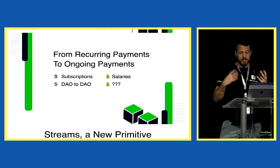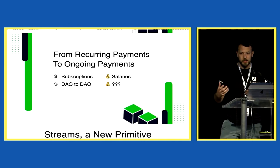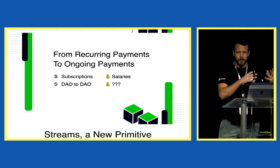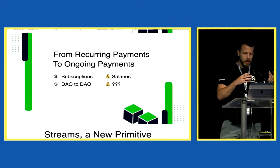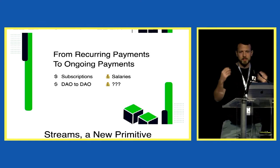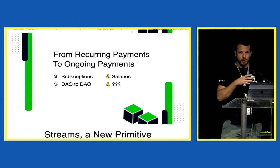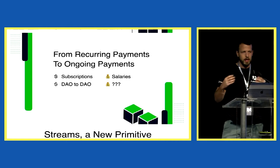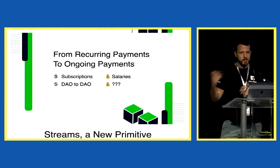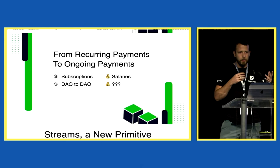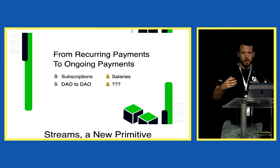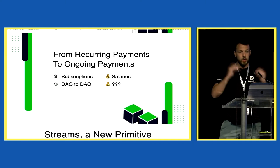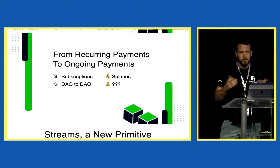The simplest things you can do with ongoing payments — which are different from the recurring payments we're used to — are subscriptions, salaries, DAO-to-DAO payments, B2B payments, DAO-to-user payments, and all sorts of ongoing payments. We're used to doing these once a month or in the US every two weeks, but that's just because that's what we could do. There's no reason paying once a month is the right way — you should get paid every second you work.